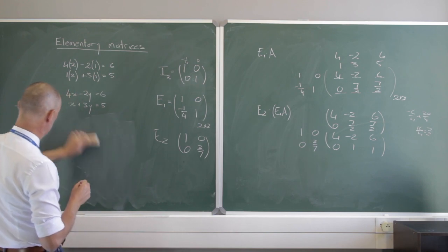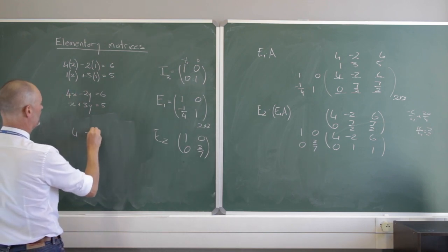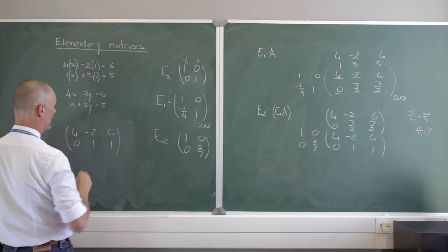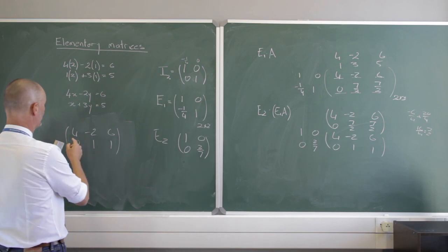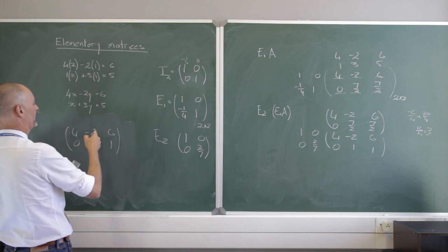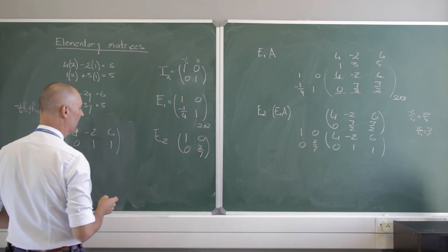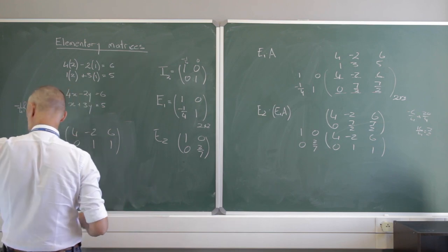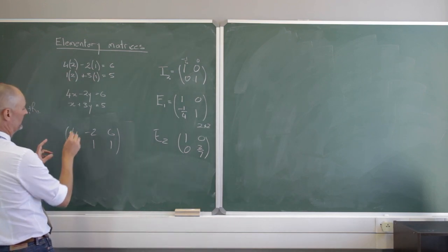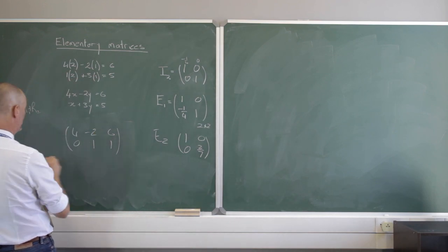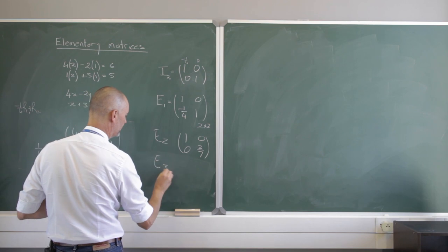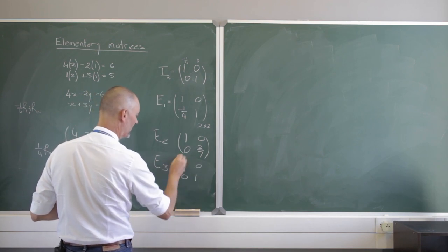Now we're left with [4, -2, 6; 0, 1, 1]. We could already do back substitution: the second row says y equals 1, and we can substitute back. But let's carry on to get full reduced row echelon form. To get a leading 1 in the first row, I multiply row 1 by a quarter. Applying that to the identity matrix gives E3: [1/4, 0; 0, 1].